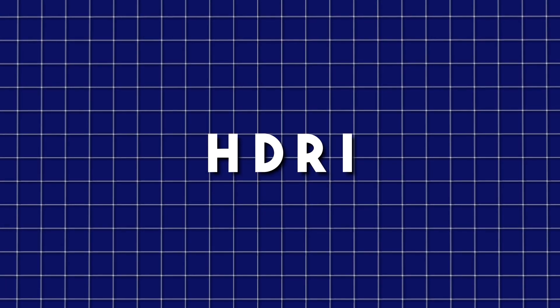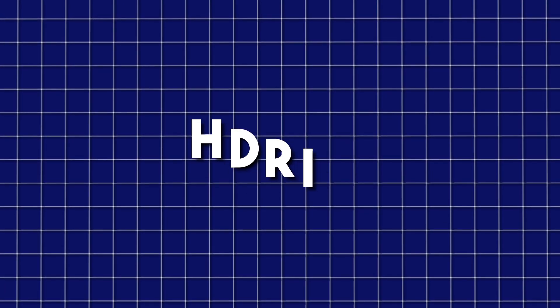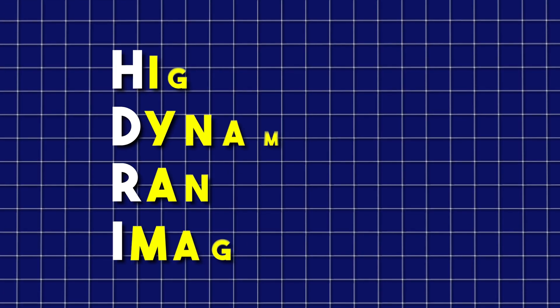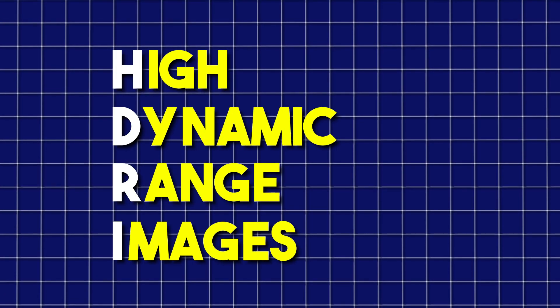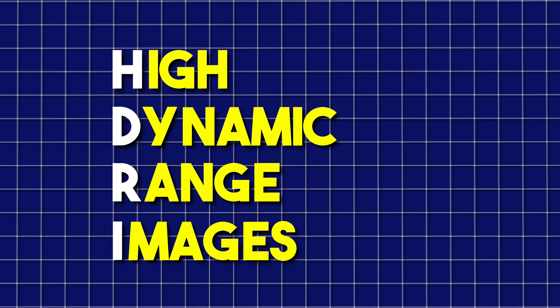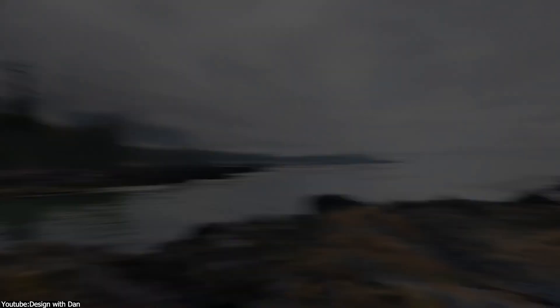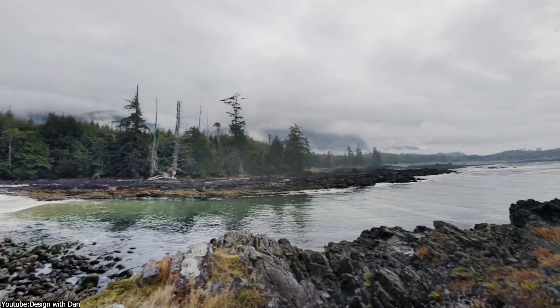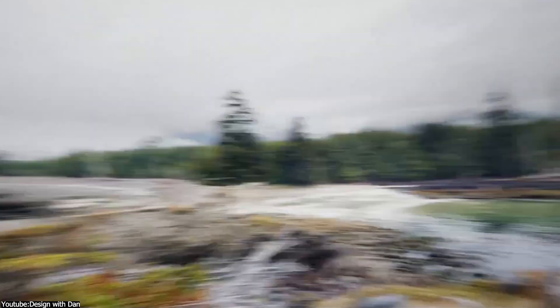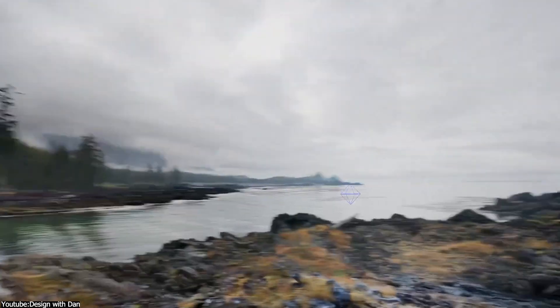In simple terms, an HDRI stands for High Dynamic Range Images, which is a method used in photography and computer graphics to capture 360-degree photos of environments in the real world.